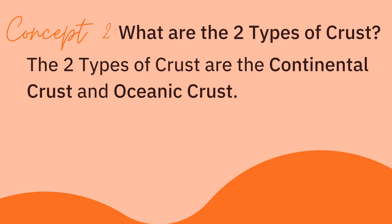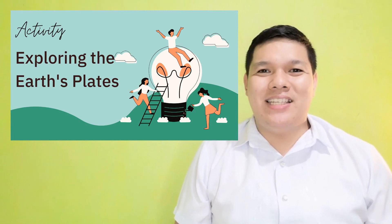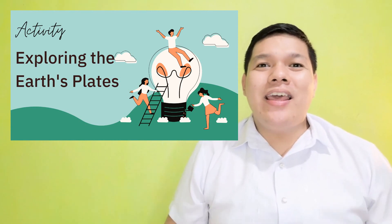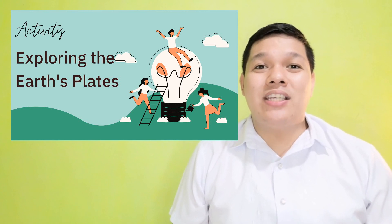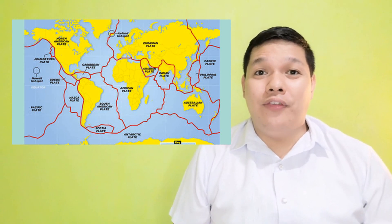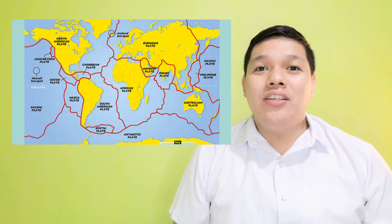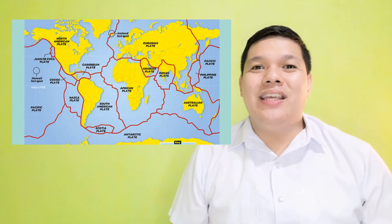For concept number two, the two types of crust are the continental crust and oceanic crust. Now, let us continue our lesson by performing a simple activity. Let us explore the different major plates found in the planet Earth. I want you to study carefully the map I'm going to show on the screen illustrating the major plates found in our planet.